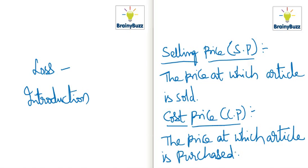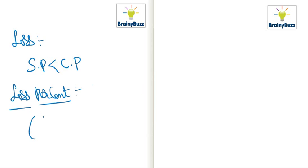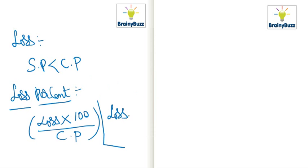Loss simply means selling price is less than cost price — the seller is said to have a loss. Loss percent means loss multiplied by 100 divided by cost price (CP). Loss is equal to CP minus SP, that is cost price minus selling price.